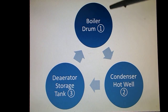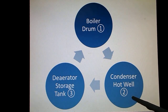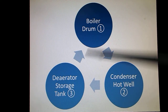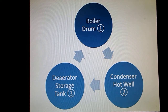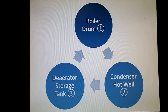So the cycle repeats: from the boiler drum, water goes to the condenser hot well; from the condenser hot well to the deaerator; and from the deaerator back to the boiler drum. We have three tanks: tank number one is the boiler drum, tank number two is the condenser hot well, and tank number three is the deaerator storage tank.